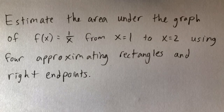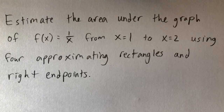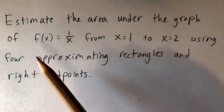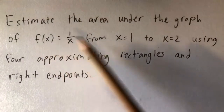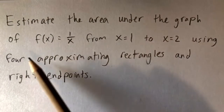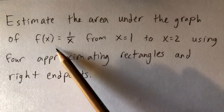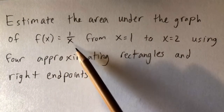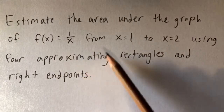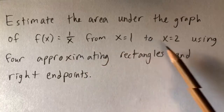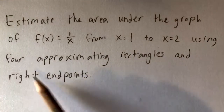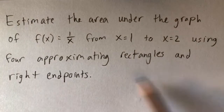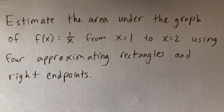Hey guys, Jake here, coming at you with another math problem today. Here's the problem we're going to be going over: we're going to estimate the area under the graph of f of x equals 1 over x, from x equals 1 to x equals 2, using four approximating rectangles and right endpoints.